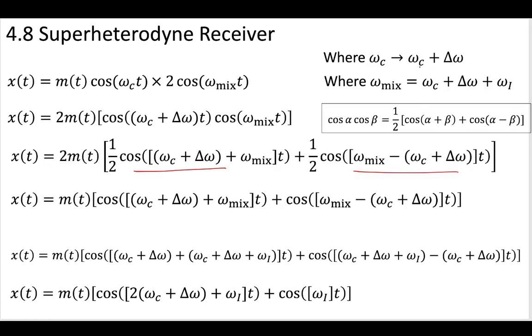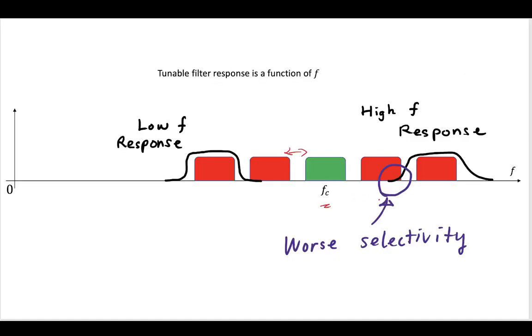So regardless of where our carrier frequency is at that higher thing, if we mix it with some mix wave, some mix frequency wave, we can see that this is going to result in some x(t) that has two waves. So no matter what our delta omega is, so if we're dealing with this channel, if we're dealing with channel 1, 2, 3, 4, each one of these has some different delta omega.